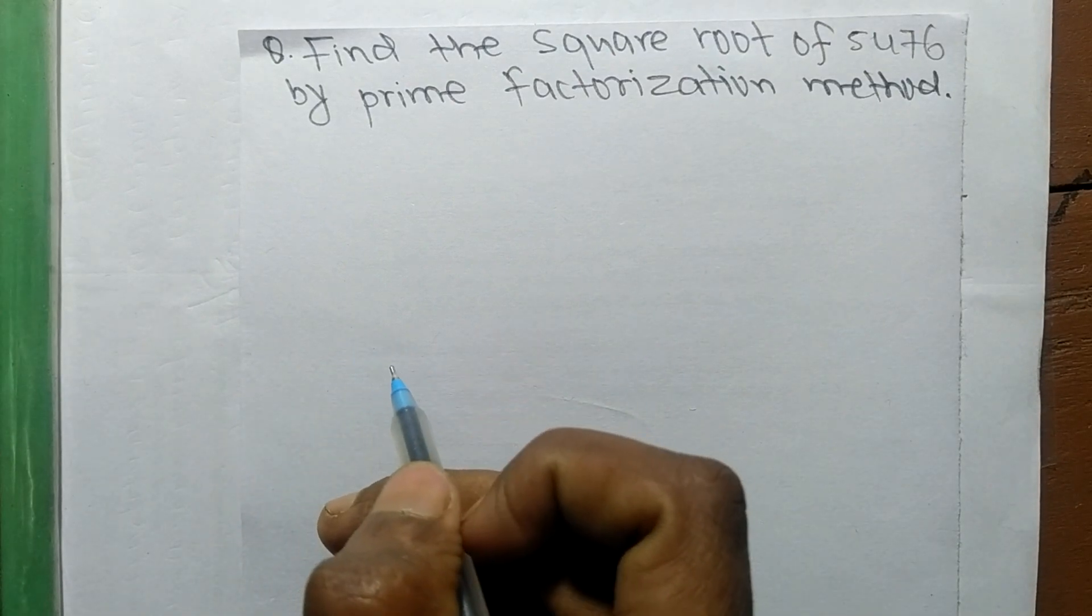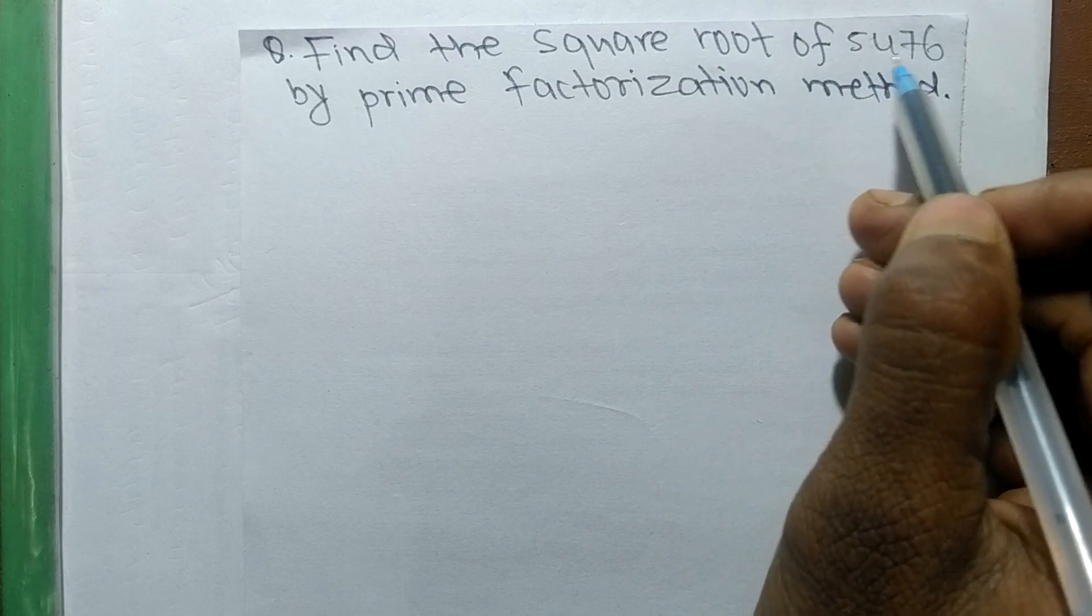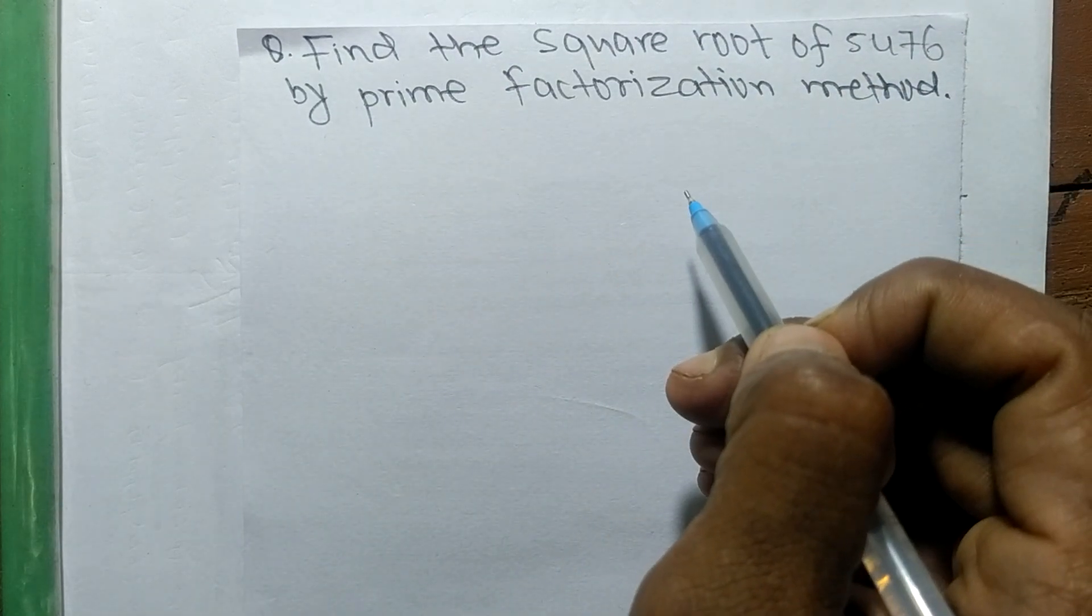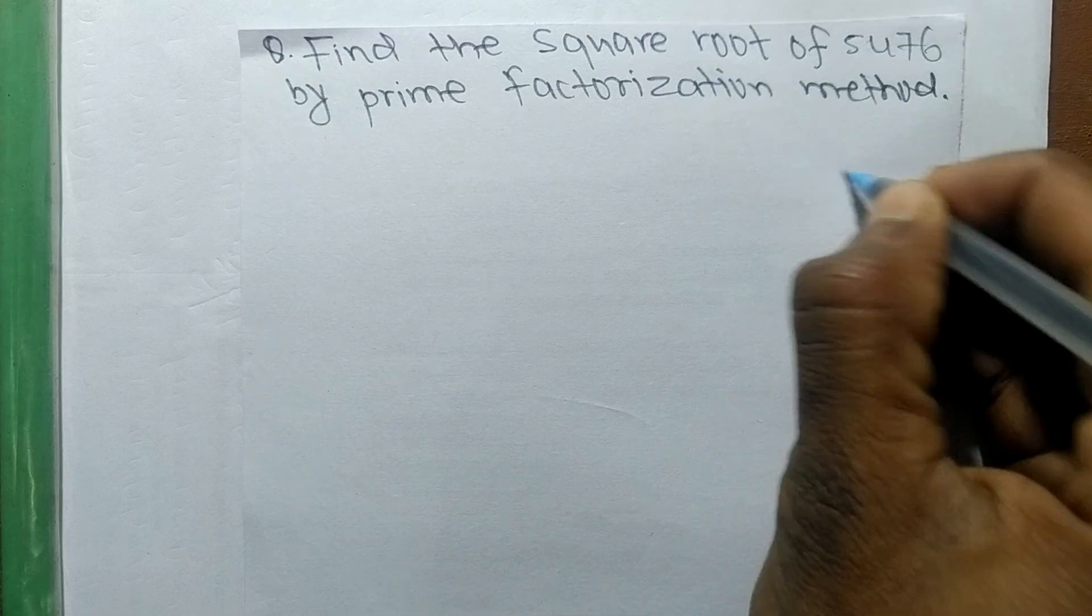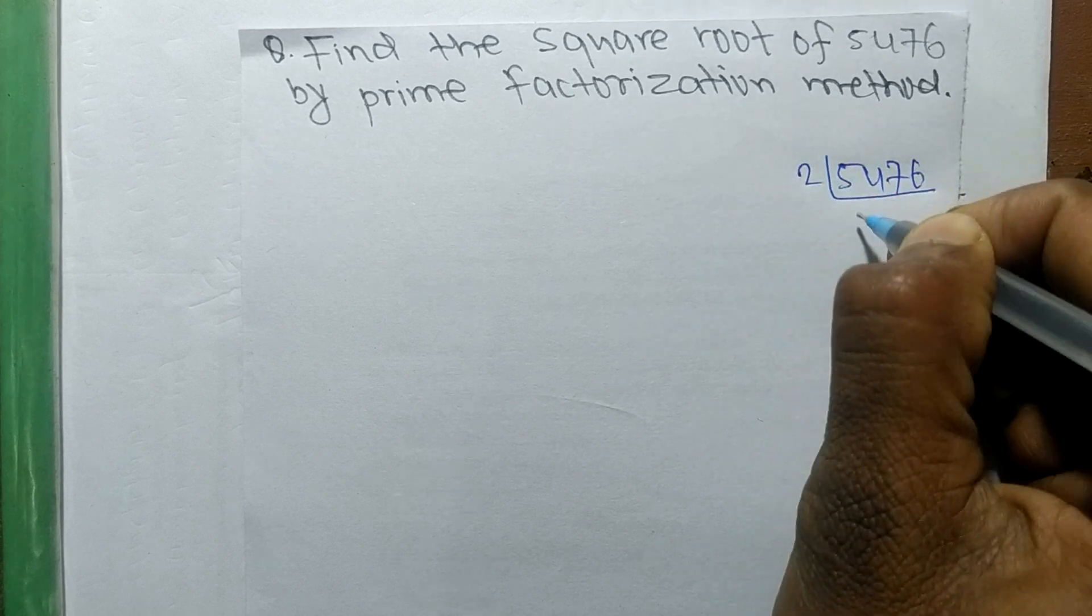So today in this video we shall learn to find the square root of 5476 by prime factorization method. So first of all we find out the prime factors of 5476.